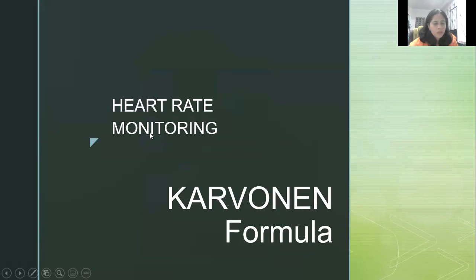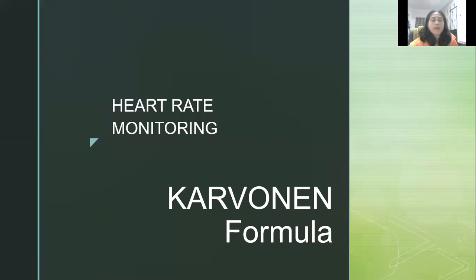For heart rate monitoring, we are going to use the Karvonen formula. The Karvonen formula is a mathematical computation that helps you determine your target heart rate, or what you call the THR training zone. The formula uses maximum and resting heart rate with desired training intensity to get your target heart rate.